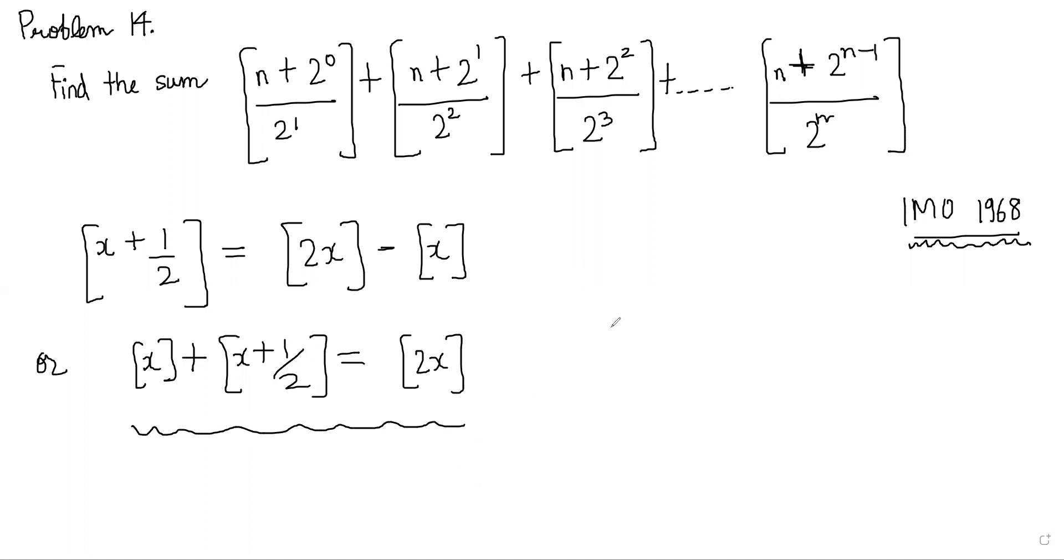I'll confirm it with some values. Let's see x equals 2.3, so 2.3 plus half is 2.8, floor of 2.8 is 2. On this side, 4.6, floor of 4.6 is 4 minus 2, which is 2 again. So we can confirm it for positive rational numbers.